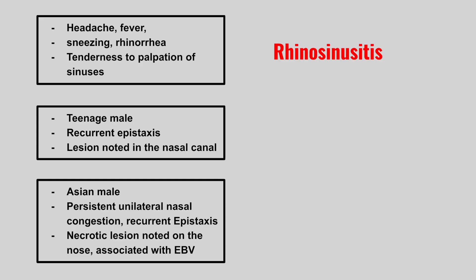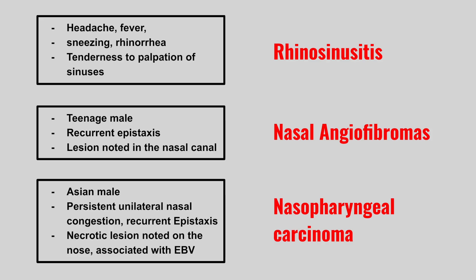Next, we have a teenage male with recurrent epistaxis and lesions noted in the nasal canal. This is nasal angiofibromas. Now we have an Asian male with persistent unilateral nasal congestion, recurrent epistaxis, necrotic lesion noted on the nose, and it's associated with EBV. This is nasopharyngeal carcinoma.